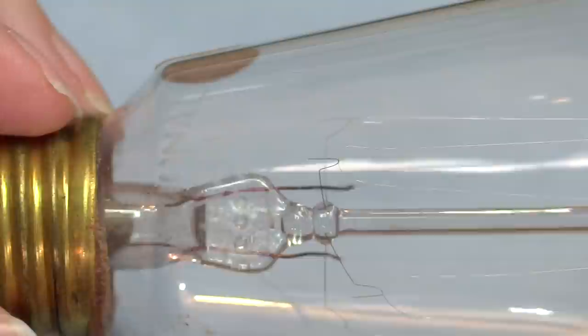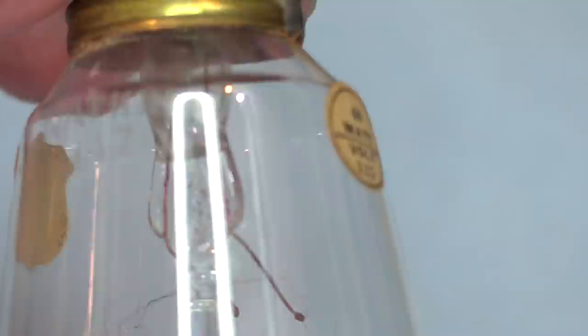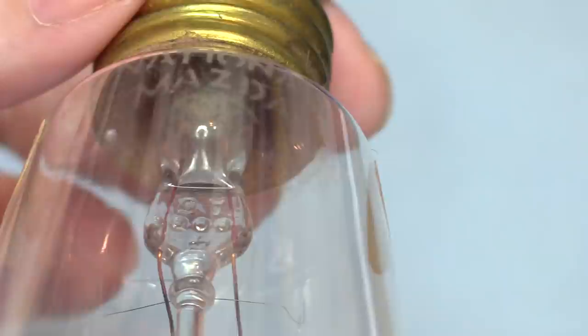And I got an etching here. General Electric. Oh, I see it's upside down. It says National Mazda. And it's got the GE logo on it. It's etched in the glass there.